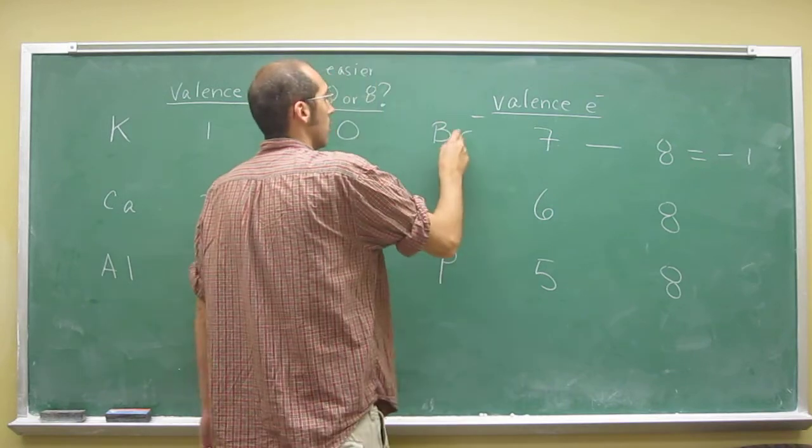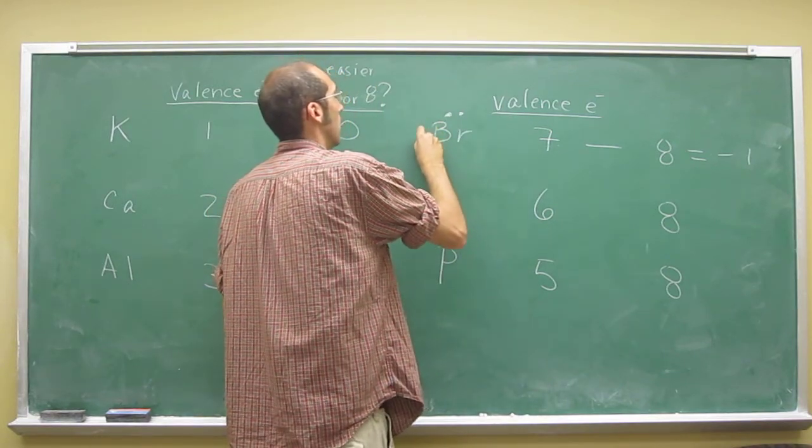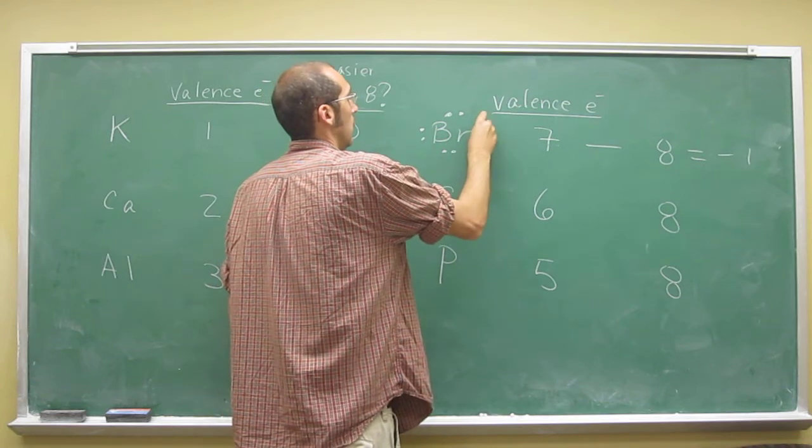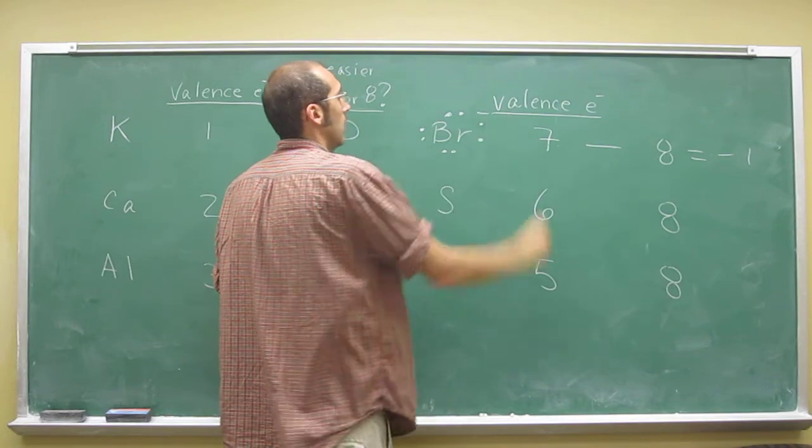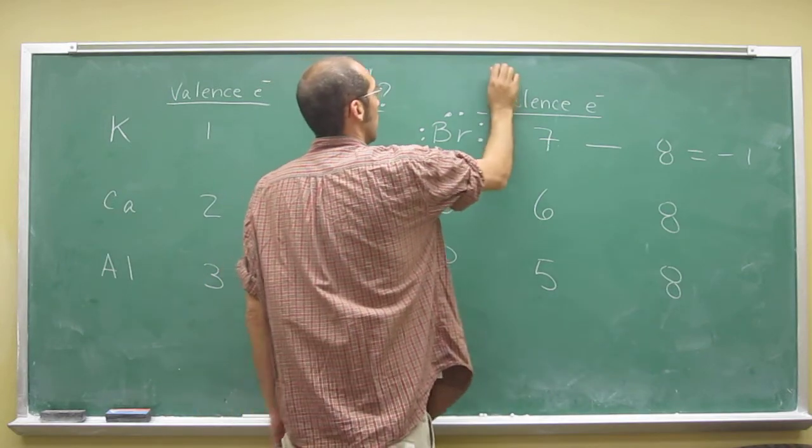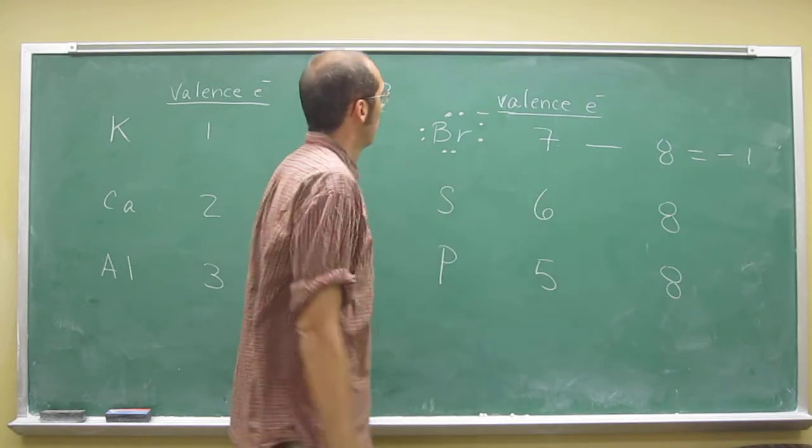If you know about Lewis structures, right? Bromine's Lewis structure was that. So if you want to do that, and then you added an electron, it'll fill its octet, give it a negative charge.